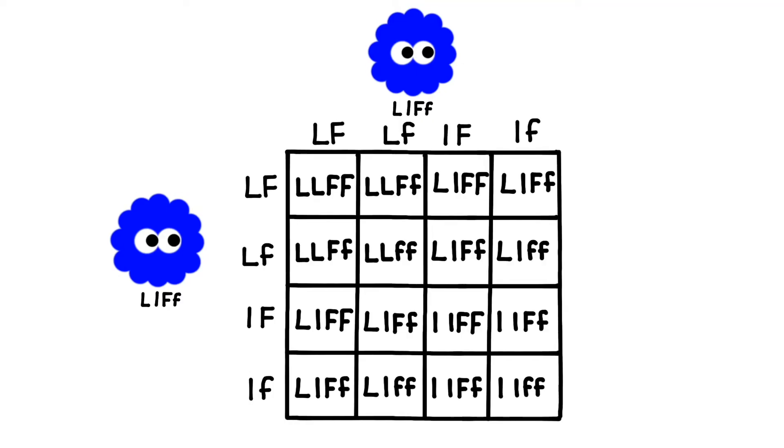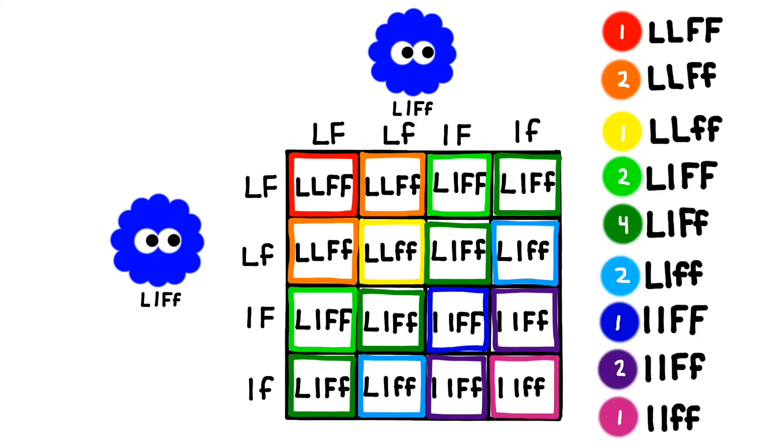Okay, so here are the potential genotypes for the offspring. Notice that some of the genotypes are much more common than others. If we color code them, we can see there are nine possible combinations of alleles. The most common genotype is this one right here, which is another dihybrid.